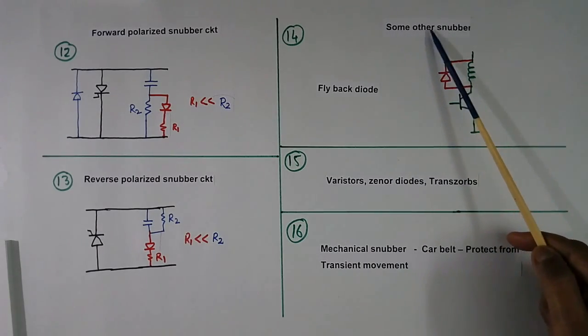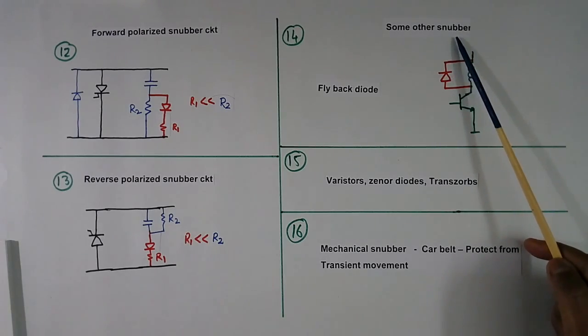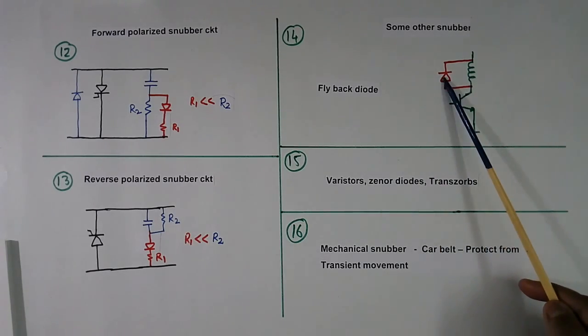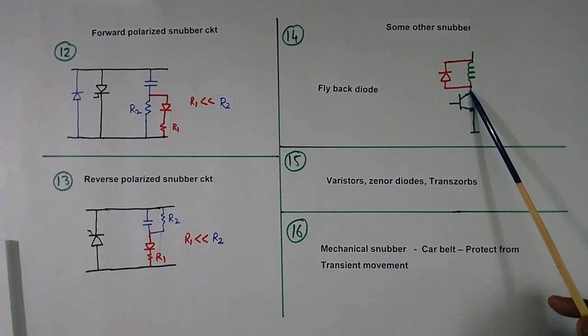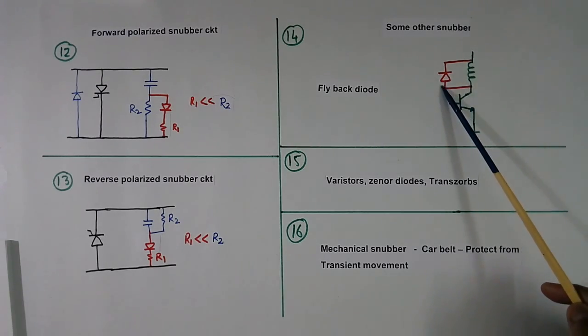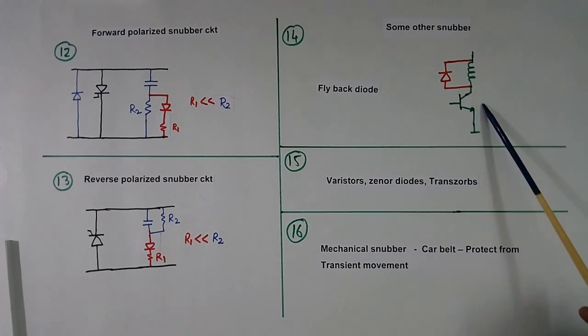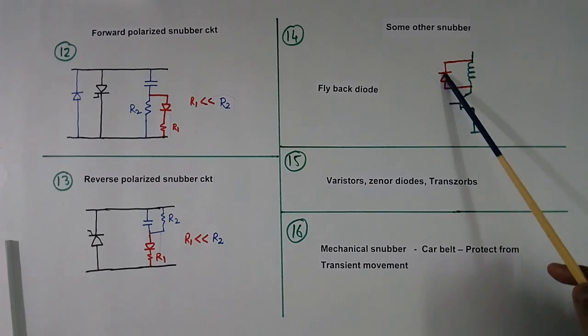Then there are some other kinds of snubber. Snubber means to attenuate something. This is flyback diode type snubber. When transistor becomes on, current will flow. When it becomes off, current will not reduce to zero because reactor doesn't allow current to become zero immediately. So this current will flow like this. If it is not there, this current will tend to flow through this stray capacitance and more voltage will come here. So this current will continue to flow till due to losses it becomes zero. Losses will be here also, here also.